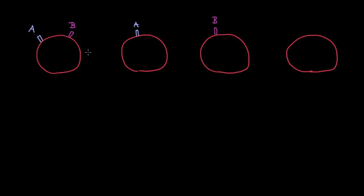The names we give to these four different kinds of red blood cells are pretty straightforward. This one we're going to call AB because it has both A and B. This one we'll call A, this one B, and this one we can't really come up with a name like that because it doesn't have anything on its surface, so we just call it O. What determines whether you have A, B, AB, or O? Like I said, it's genetically determined, just like your eye color.